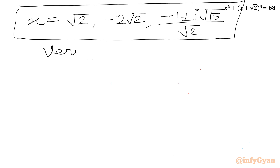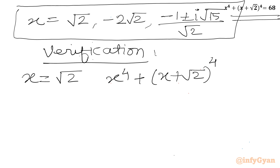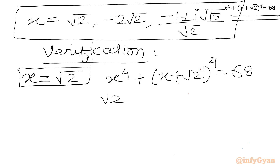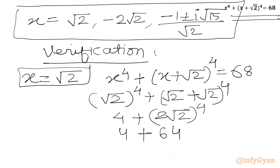Verification: checking x = √2 in x⁴ + (x + √2)⁴ = 68. Substituting: (√2)⁴ + (√2 + √2)⁴ = (√2)⁴ + (2√2)⁴ = 4 + 2⁴·(√2)⁴ = 4 + 16·4 = 4 + 64 = 68. This matches the RHS, so x = √2 is verified.